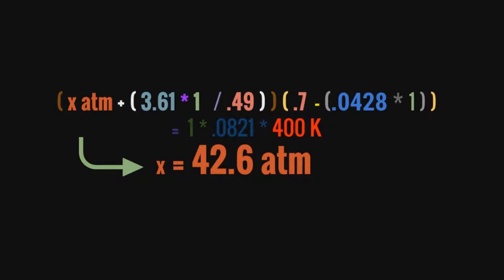Okay. Now we have our actual solution. So we have x atmospheres, the pressure, plus 3.61. That's our A constant times the number of moles squared, which is one squared, right? We only have one mole, over the volume squared, which is 0.7 squared, which is 0.49. So that whole quantity times the volume, 0.7, minus BN. So B is our 0.0428.